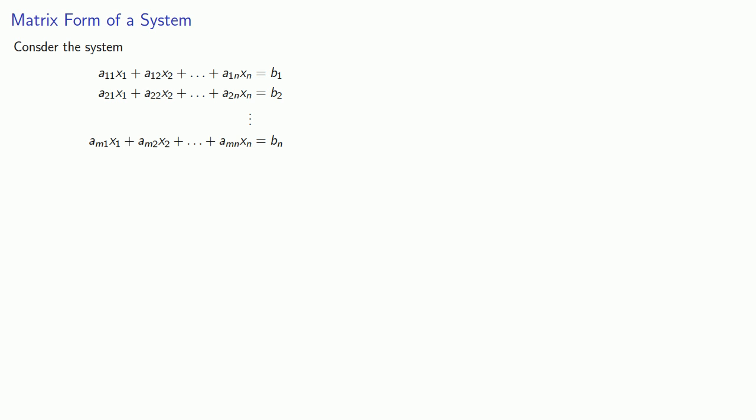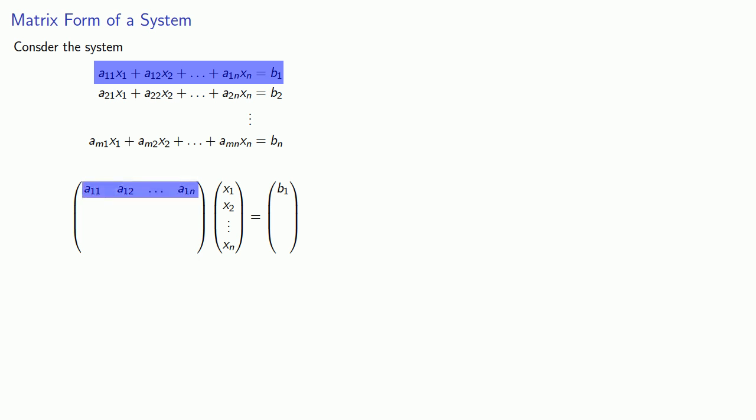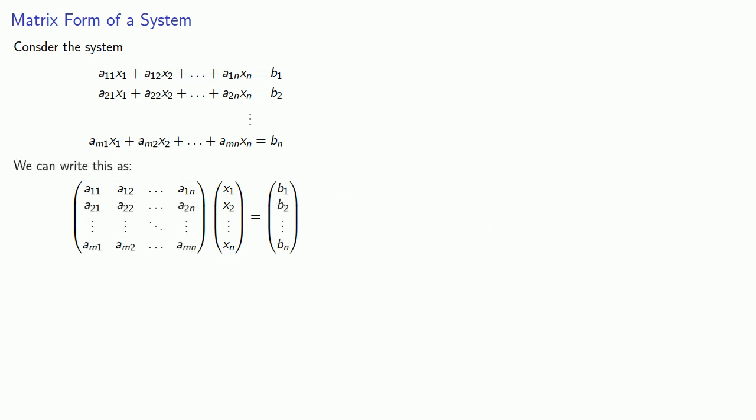Our definition of matrix multiplication also allows us to rewrite linear equations. Consider a system of equations and note that if we look at each equation, we can read the expression on the left as the product of the row of a coefficient matrix with a column of the variables. And so our system of equations can be rewritten as the matrix product — coefficient matrix times the column vector of our variables — equals the column vector of our constant terms.